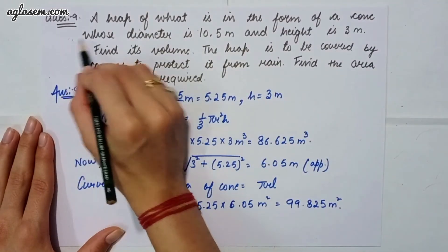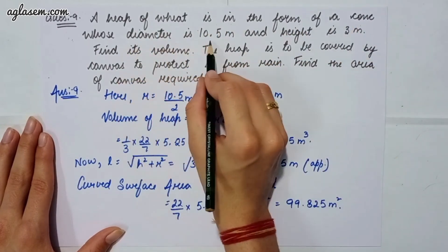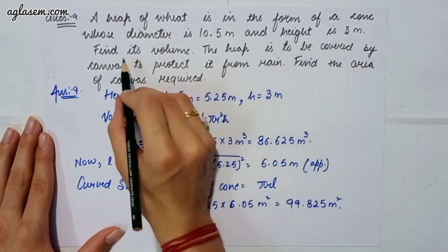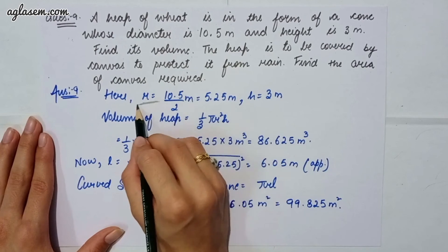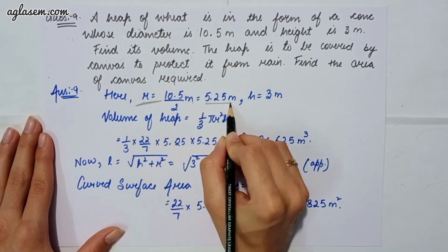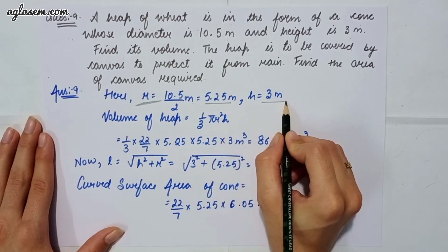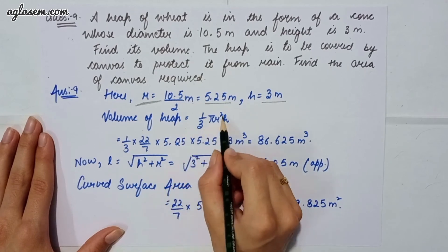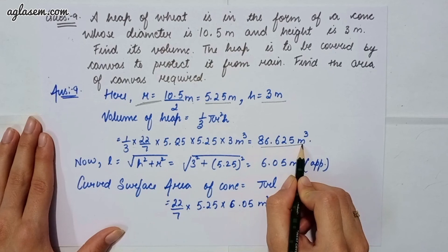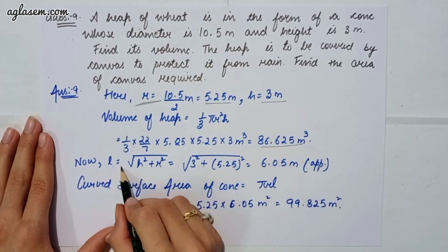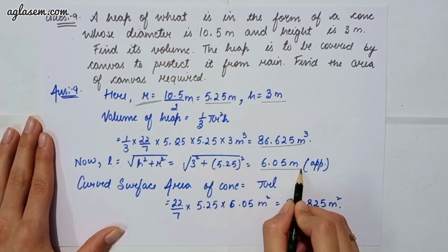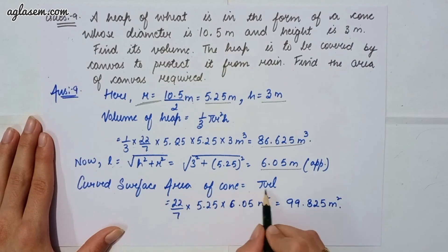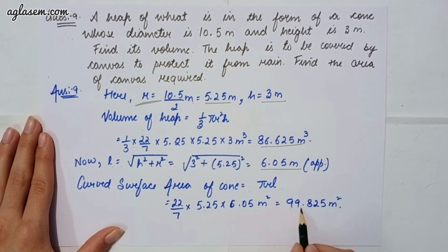Moving to our ninth and last question: a heap of wheat is in the form of a cone whose diameter is 10.5 m and height is 3 m. Find its volume. Radius = 10.5 / 2 = 5.25 m and height = 3 m. Volume = 1/3 × π × r² × h = 86.625 m³. The heap is to be covered by canvas to protect it from rain, so find the area of canvas required. Slant height l = √(h² + r²) = √(9 + 27.5625) ≈ 6.05 m. Curved surface area = π × r × l = 22/7 × 5.25 × 6.05 ≈ 99.825 m².